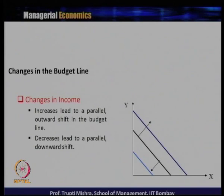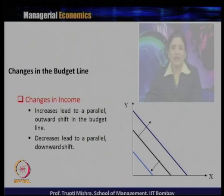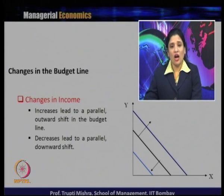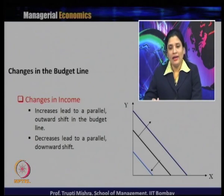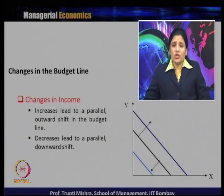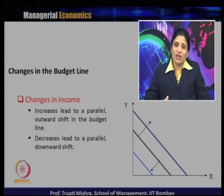Before analyzing consumer equilibrium, we will see in which cases the budget line changes. First, when there is a change in income: an increase in income leads to a parallel outward shift in the budget line — a right shift — and a decrease in income leads to a left shift in the budget line.